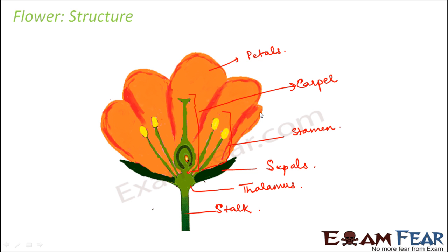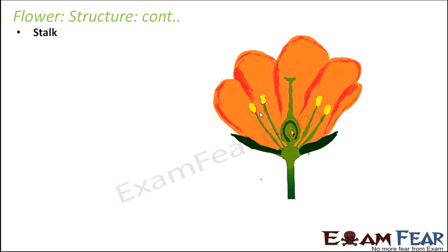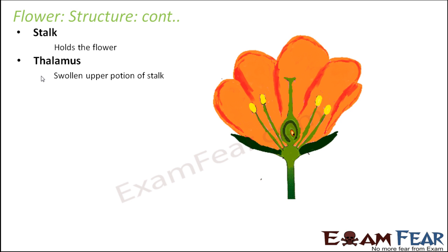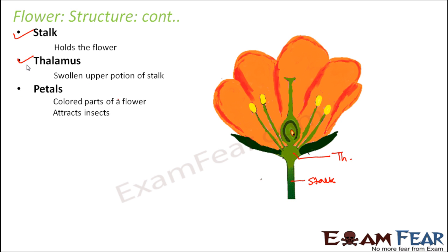Now we will discuss each of these parts in detail one by one. The stalk is the very basic part of the flower — it holds the flower and is a cylindrical rod-like structure. The next portion is the thalamus, which is the swollen upper portion of the stalk.